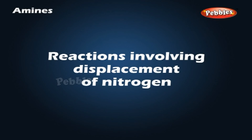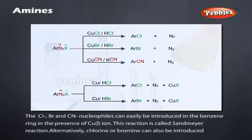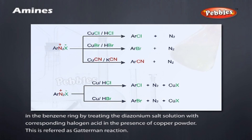Chemical Reactions of Diazonium Salts — Reactions Involving Displacement of Nitrogen: Replacement by halide or cyanide ion — the Cl⁻, Br⁻, and CN⁻ nucleophiles can easily be introduced in the benzene ring in the presence of Cu(I) ion. This reaction is called the Sandmeyer reaction. Alternatively, chlorine and bromine can also be introduced in the benzene ring by treating the diazonium salt solution with the corresponding halogen acid in the presence of copper powder. This is referred to as the Gattermann reaction.